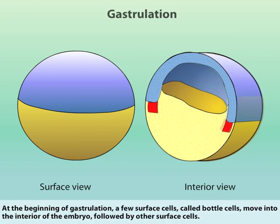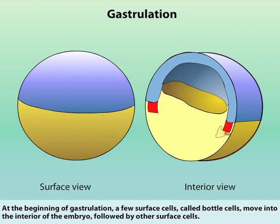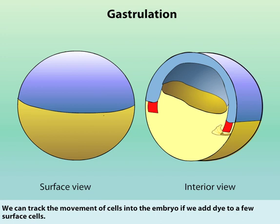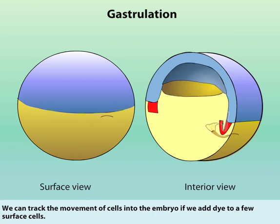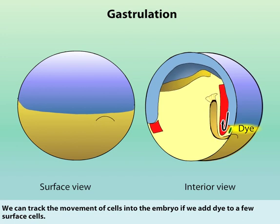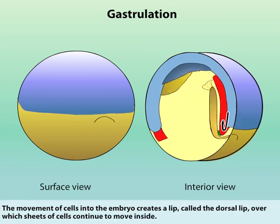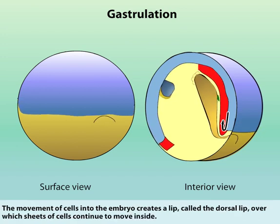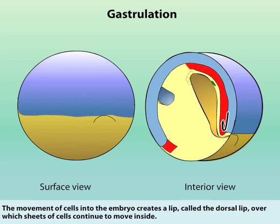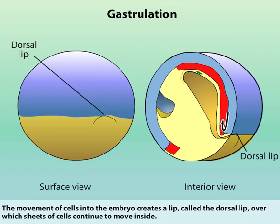At the beginning of gastrulation, a few surface cells called bottle cells move into the interior of the embryo, followed by other surface cells. We can track the movement of cells into the embryo if we add dye to a few surface cells. The movement of cells into the embryo creates a lip called the dorsal lip, over which sheets of cells continue to move inside.